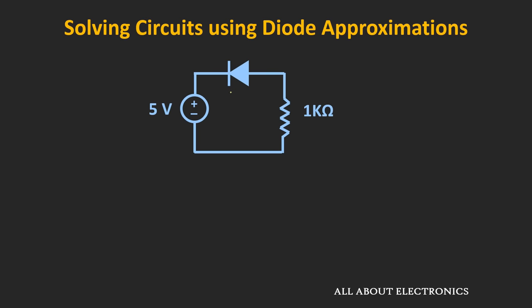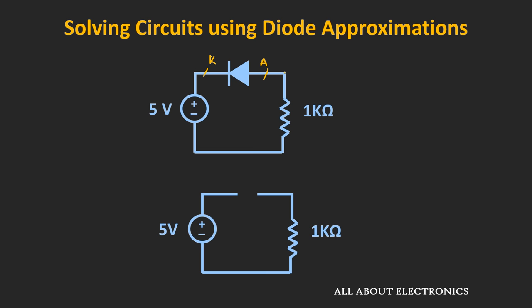Now let's assume the diode is a silicon diode again, but the direction has been reversed. In this case, if you find the Thevenin's equivalent voltage across the anode and cathode, the voltage will be −5V because the anode is on the right-hand side and the cathode is on the left. So the equivalent voltage across this diode is −5V, meaning the diode is reverse biased. Therefore there will be no current flow, and the diode current Id = 0. Using this diode approximation, we can easily analyze and solve circuit problems. The values obtained are not perfectly accurate, but they are quite close to actual values and sufficient for circuit analysis and troubleshooting.